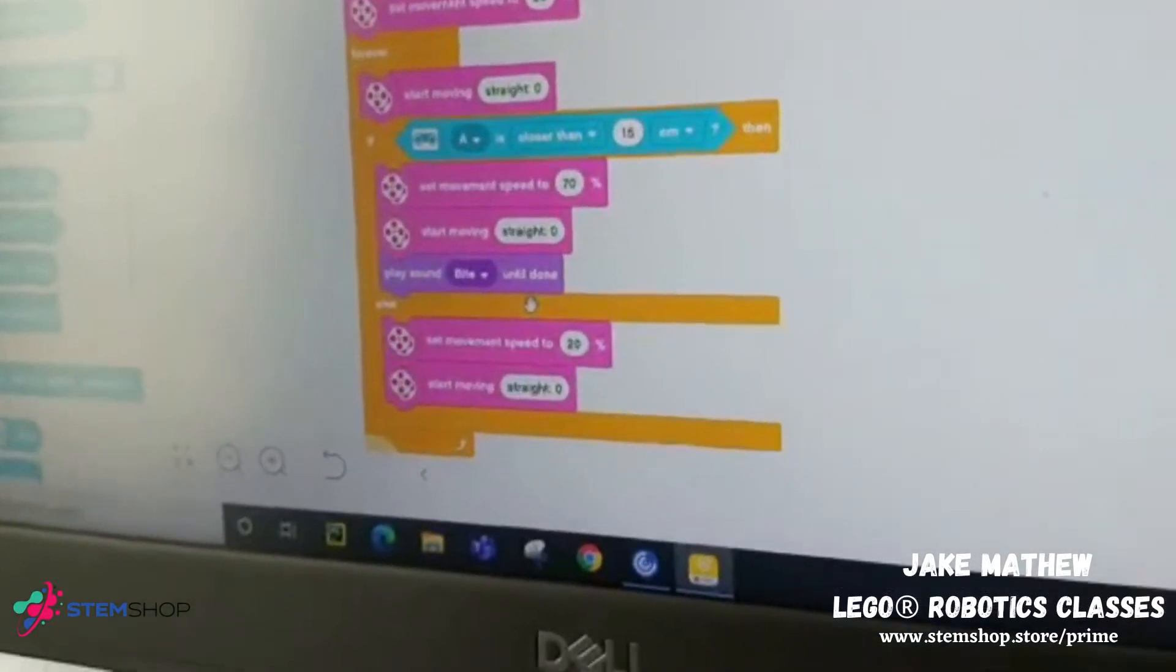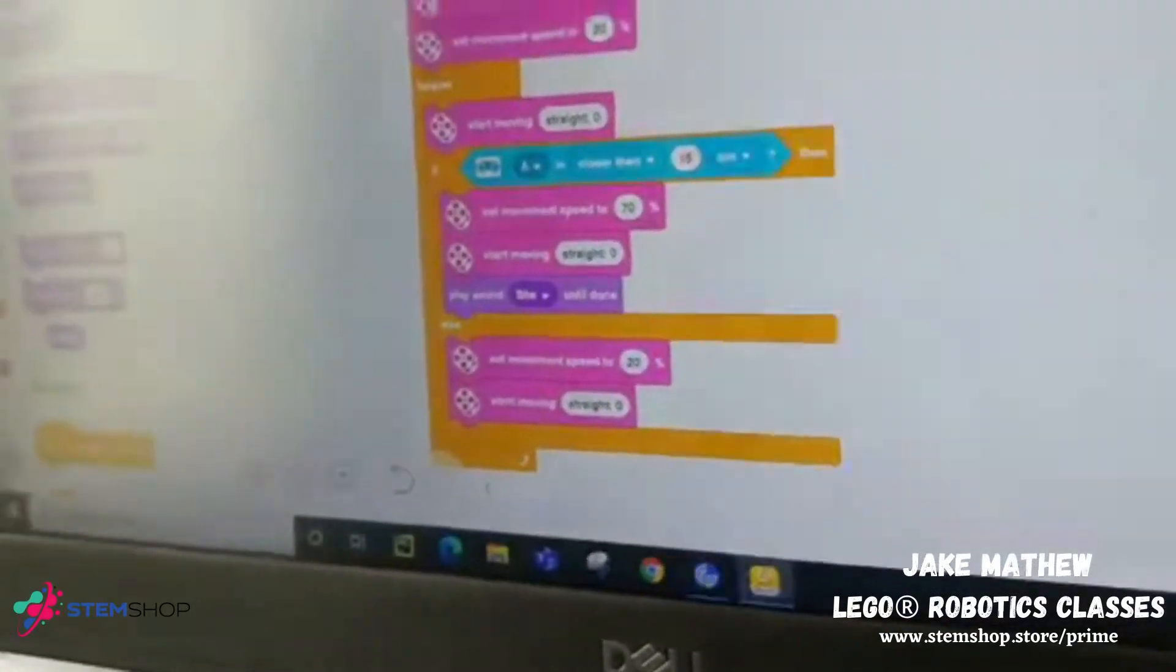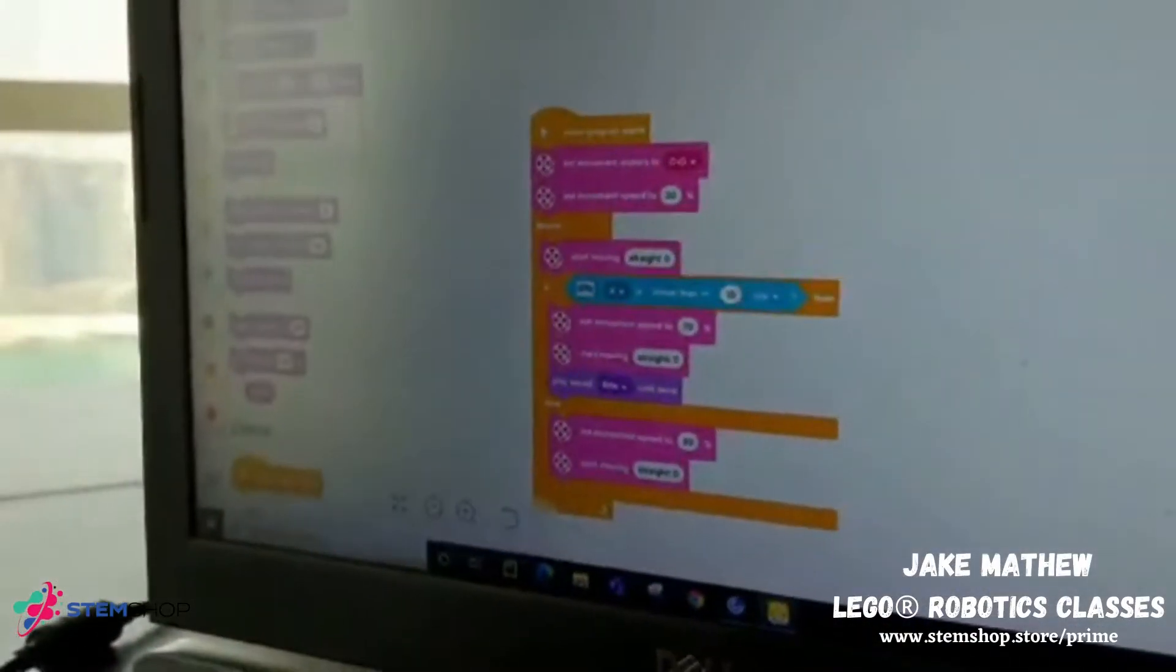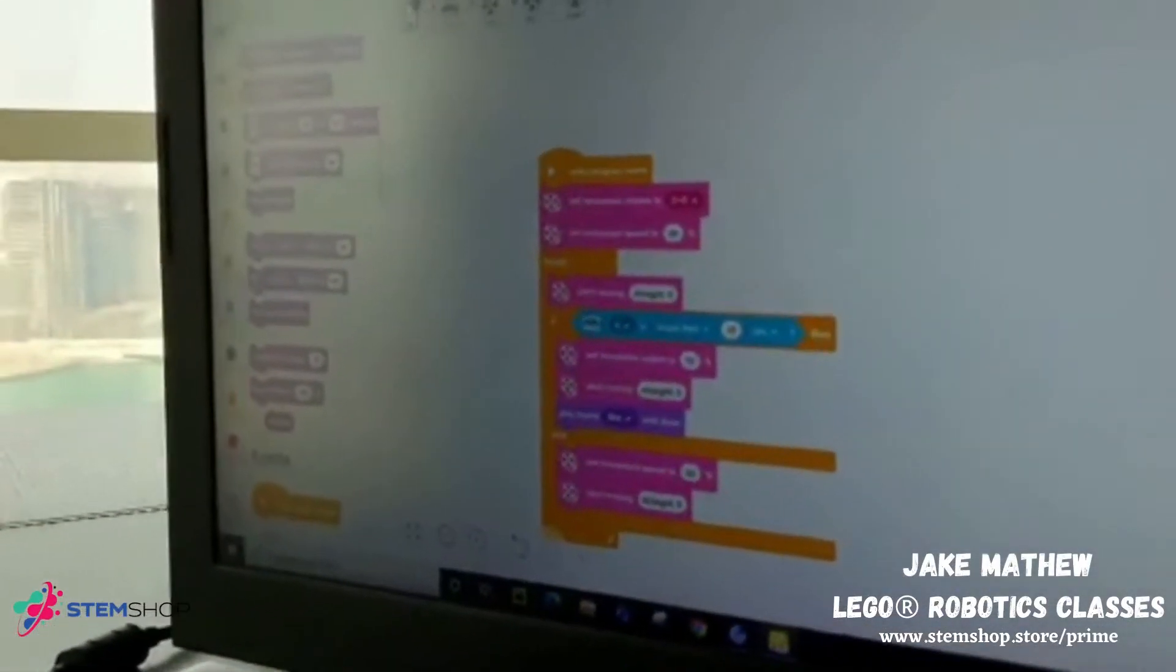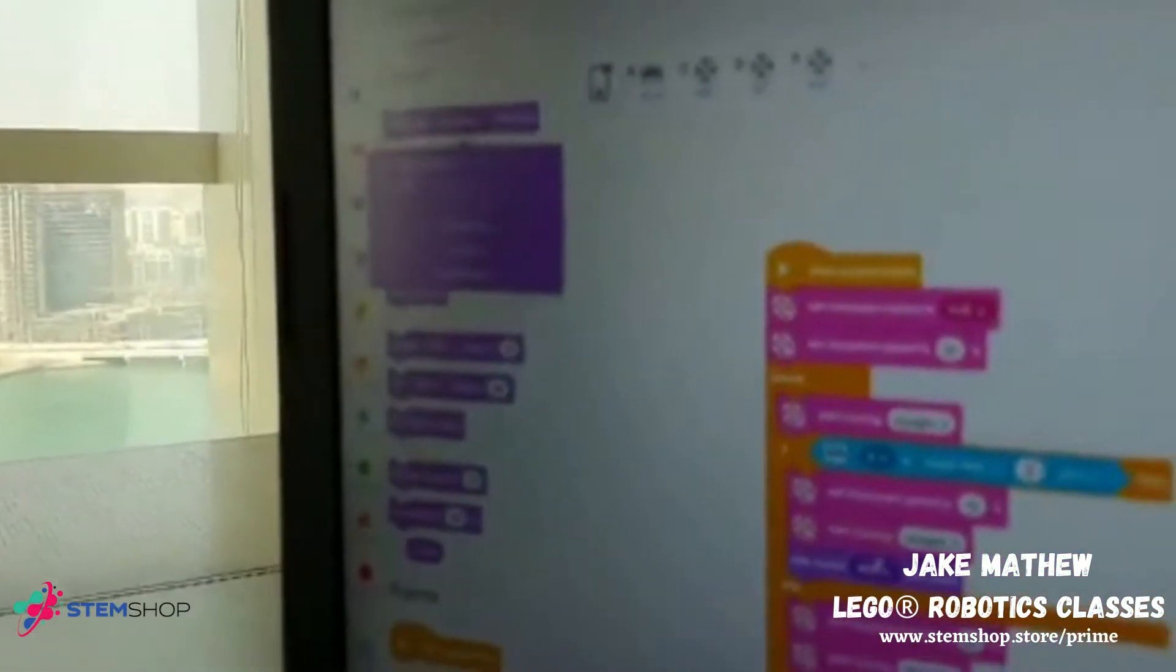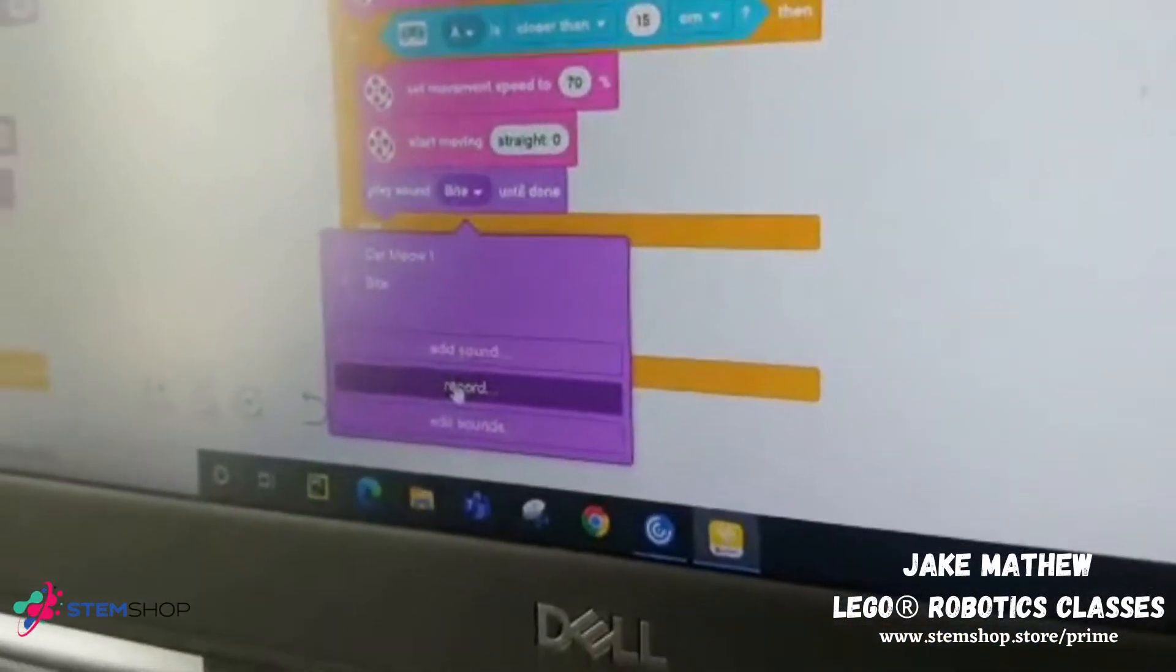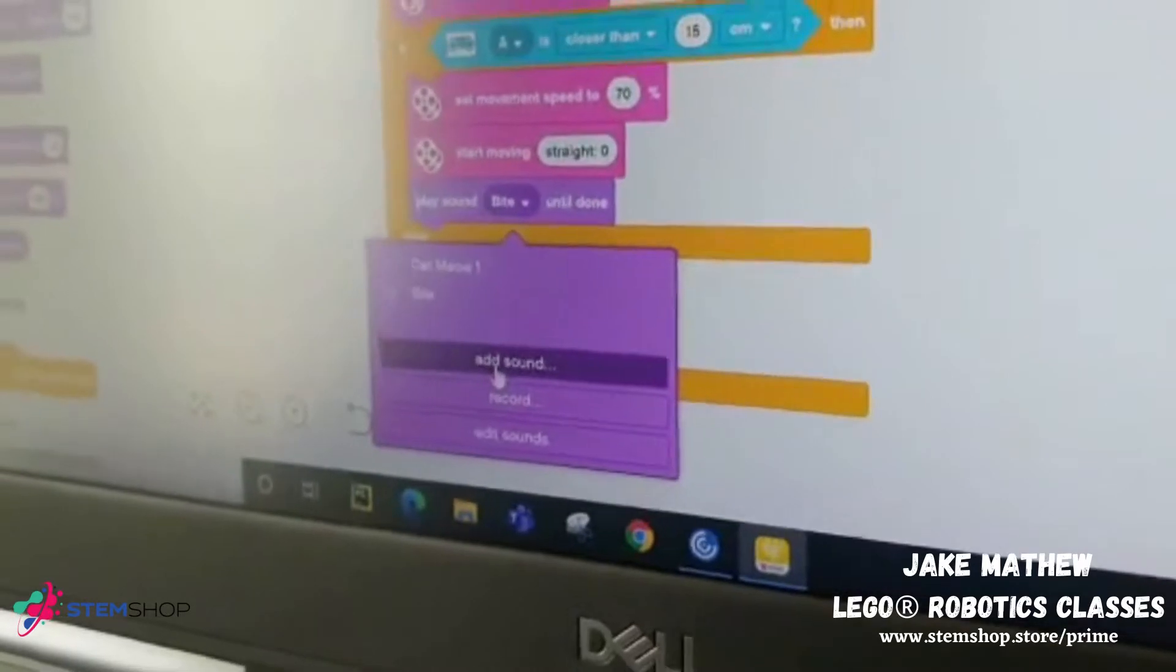Then, next one, if you want to put any sound, just press, go to sound and put place sound until done. So, you can just change the sound here. You can just put like, I'll show you here. I put it on byte because it's a line catcher. So, I'll put it add sound here.